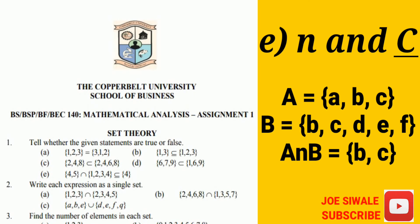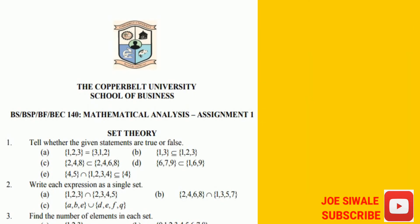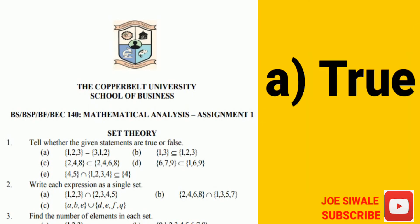And to answer question 1, I will start with question A. For the first set, I have {1, 2, 3} equals the second set which is {3, 1, 2}. And the answer here is true.